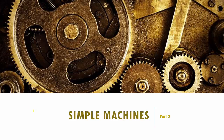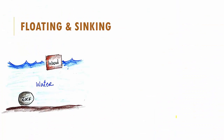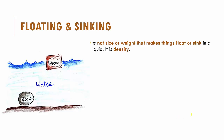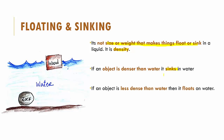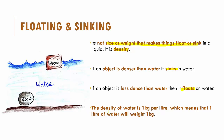Hello children and welcome back to simple machines part 3. In part 2 we spoke about floating and sinking. We saw that it's not about size or weight that makes things float or sink, but it is their density. If an object is denser than water it will sink, whereas if it is less dense than water it will float. The density of water is 1 kg per liter, meaning 1 liter of water weighs 1 kg.